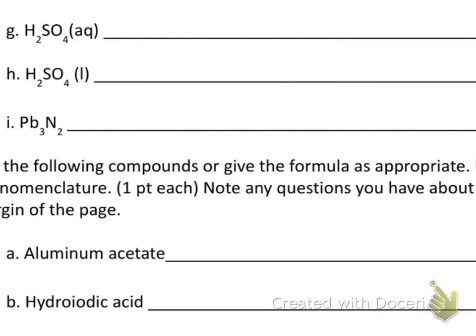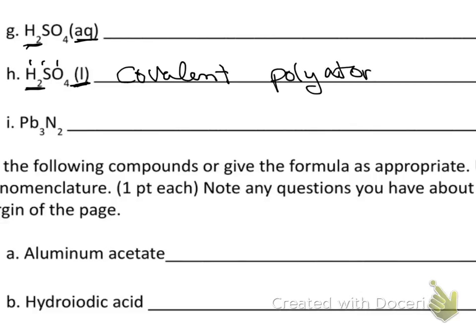Comparing H2SO4 liquid versus H2SO4 aqueous: both have H, but one is liquid and one is aqueous. For something to be an acid it has to be dissolved in water — otherwise it's just a covalent compound. H2SO4 liquid is not binary because there are three different kinds of elements, so it's a covalent polyatomic compound.